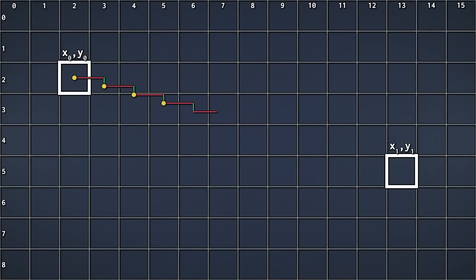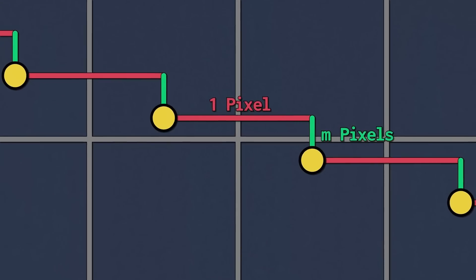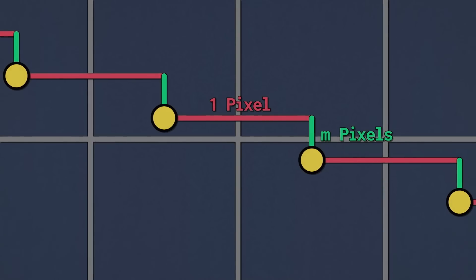To begin writing the algorithm, we first need to plot points along our line. That looks something like this. If we zoom in, we can see that for each step we move one pixel on the x-axis and m pixels on the y-axis. Let's write a simple loop that does just that.